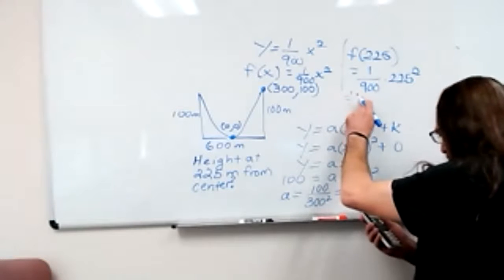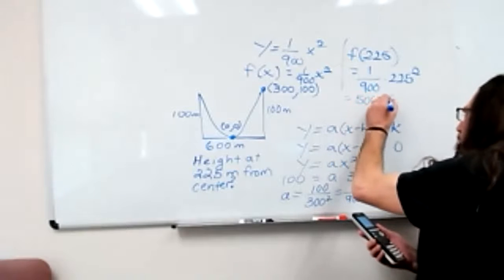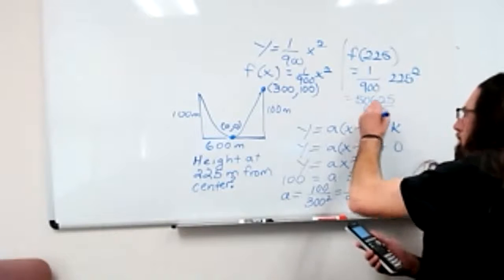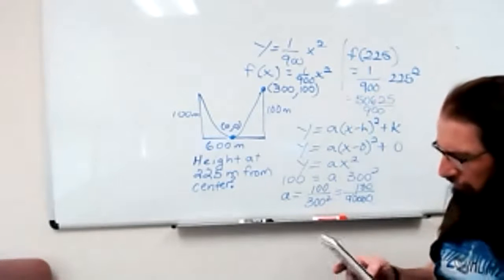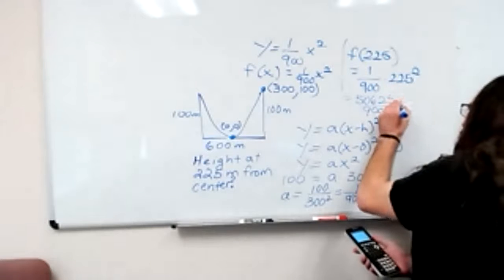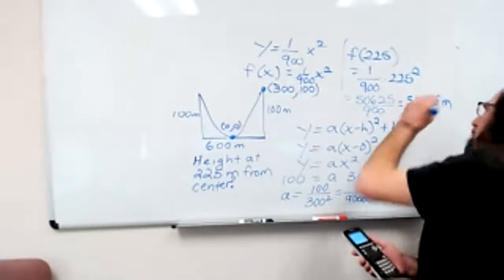So we've got 50625. And dividing that by 900, we've got 56.25. And that is also in meters.